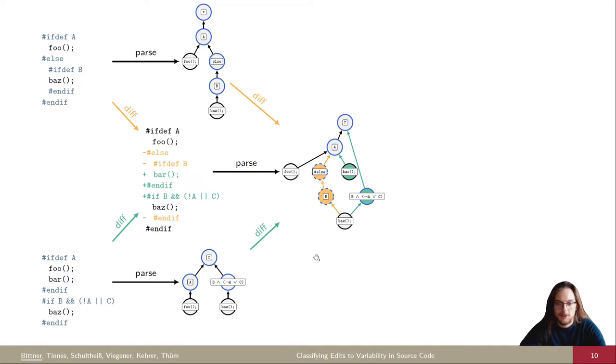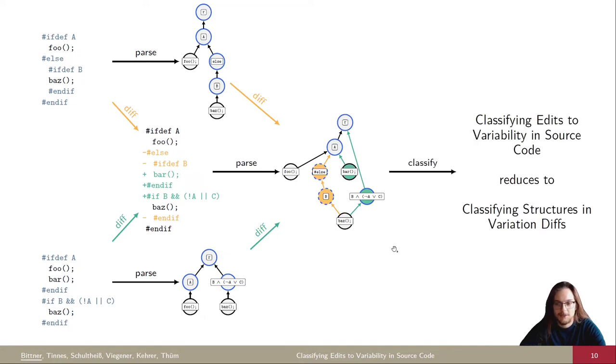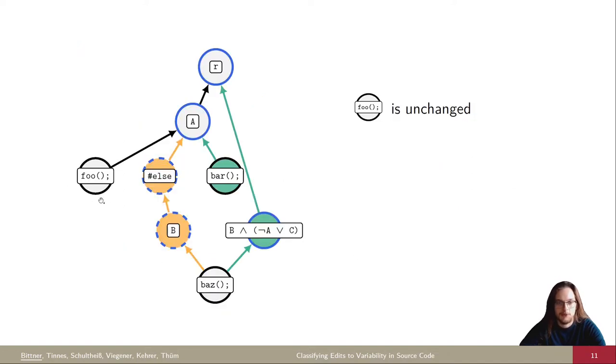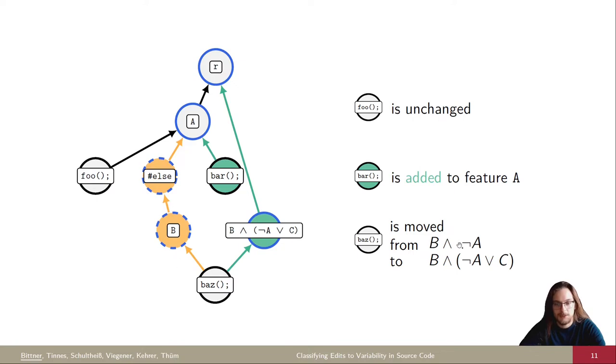Our goal of classifying edits then reduces to classifying structures in variation diffs, because these are now our model for variability in source code. So in looking at this tree, we find that the node foo was actually unchanged, so this source code didn't experience any changes, neither itself nor the nodes above in the hierarchy. The source code line bar was inserted to an already existing configuration option or feature A. And the source code line bus wasn't changed itself, but it was moved from some configuration options to others. So previously it was mapped to B and not A, which is given by the annotation B and being nested in an else branch of A. And afterwards it is assigned to this more complicated formula.